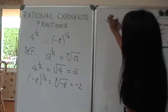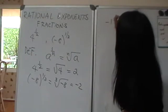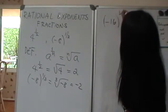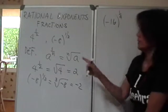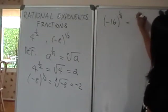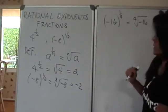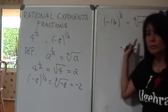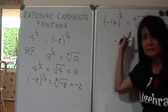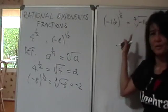Now what do I mean by a should make the expression valid? So for instance, if I have, let's say, negative 16 raised to the 1/4. So following this definition, this would be the fourth root of negative 16. And hopefully by now you know that we cannot take the even index root of negative numbers.